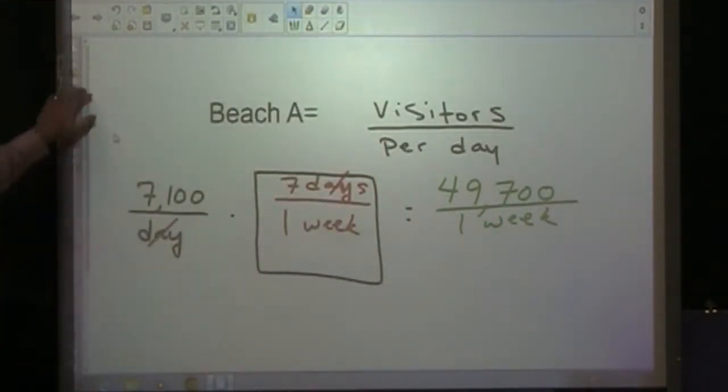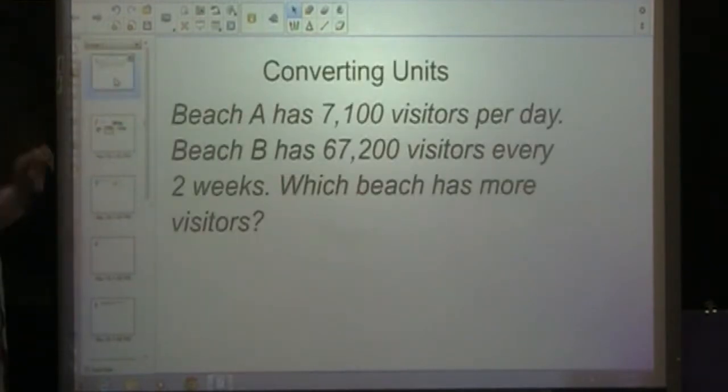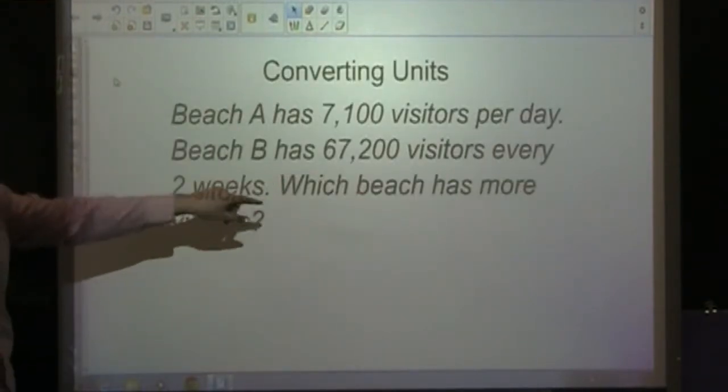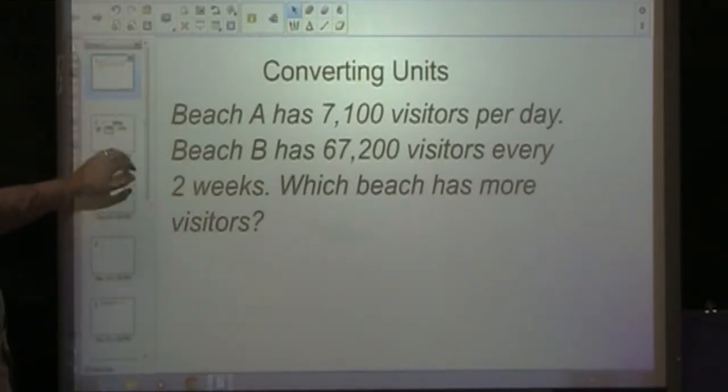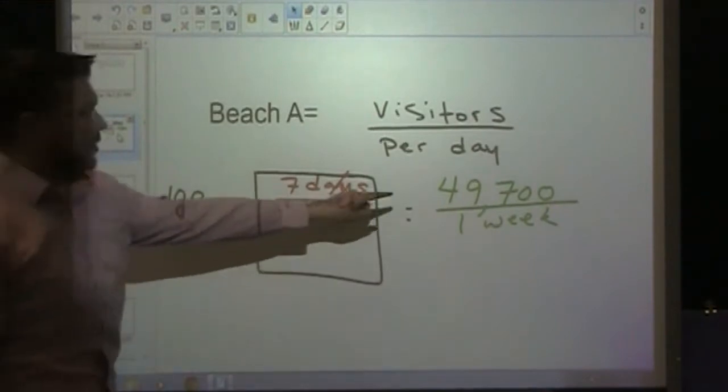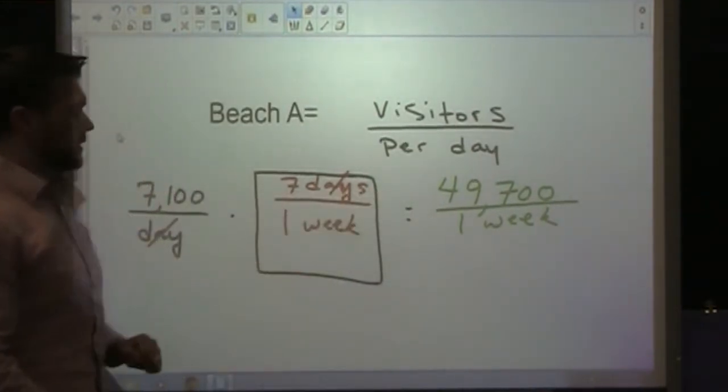We're almost to our answer at this point. We look back at the original problem and see that Beach B has 67,200 visitors in two weeks. So we need to go back and multiply our number of visitors in one week times two.